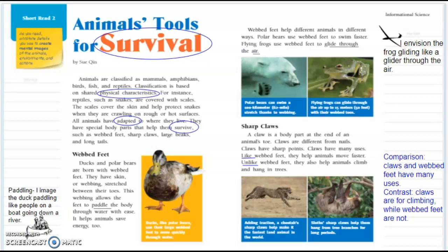Sharp claws: A claw is a body part at the end of an animal's toe. Claws are different from nails. Claws have sharp points. Claws have many uses. Like webbed feet, they help animals move faster. Unlike webbed feet, they also help animals climb and hang in trees.